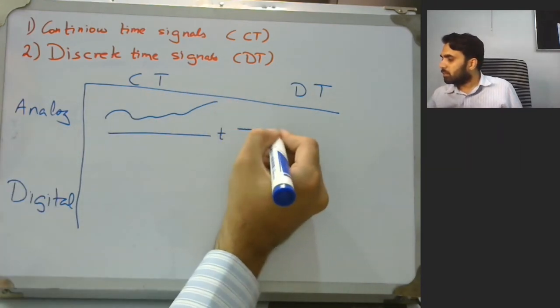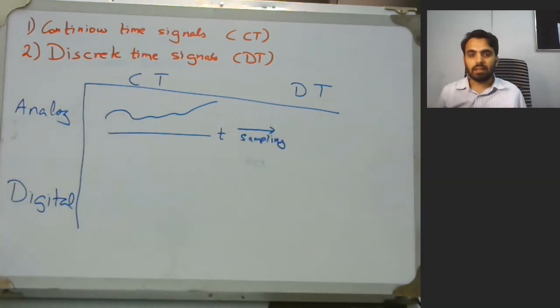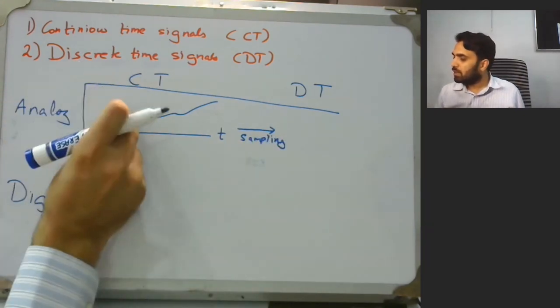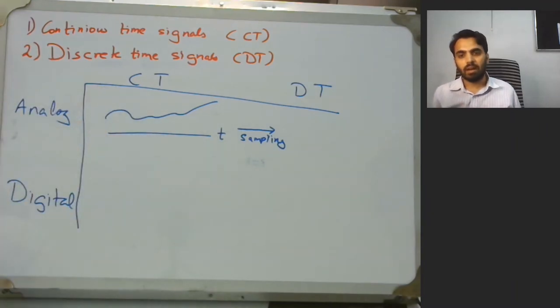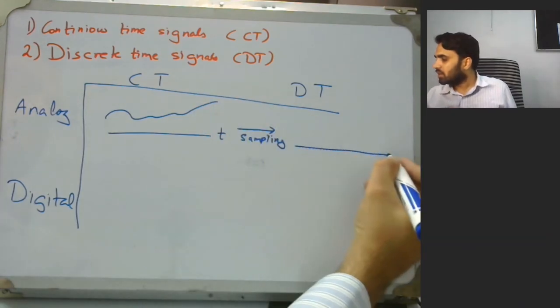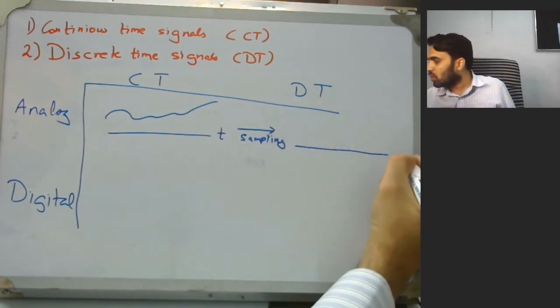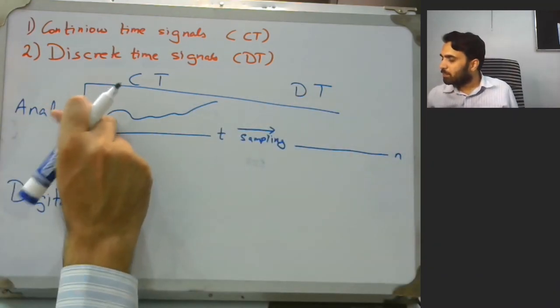Next, if we perform sampling, that is we take the values of this signal at particular instants of time and those values should be integer multiples. This T would convert to N, and we would be taking sample values.